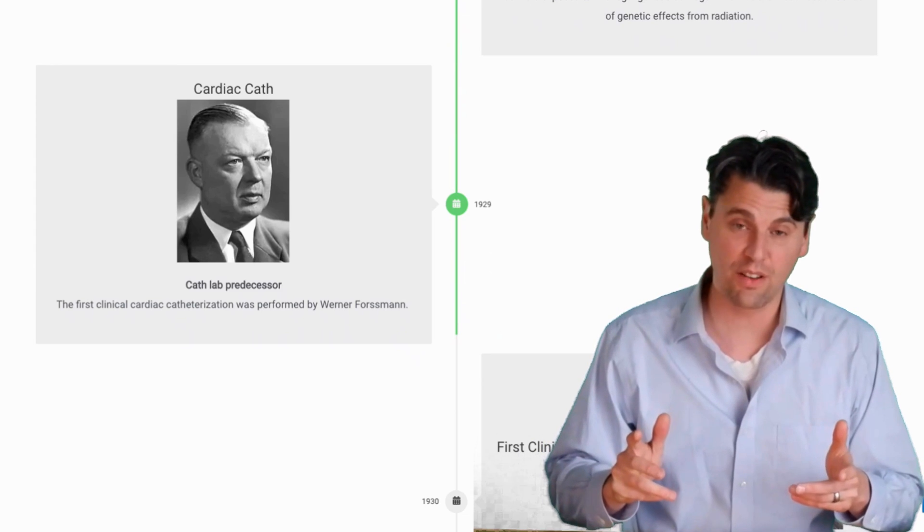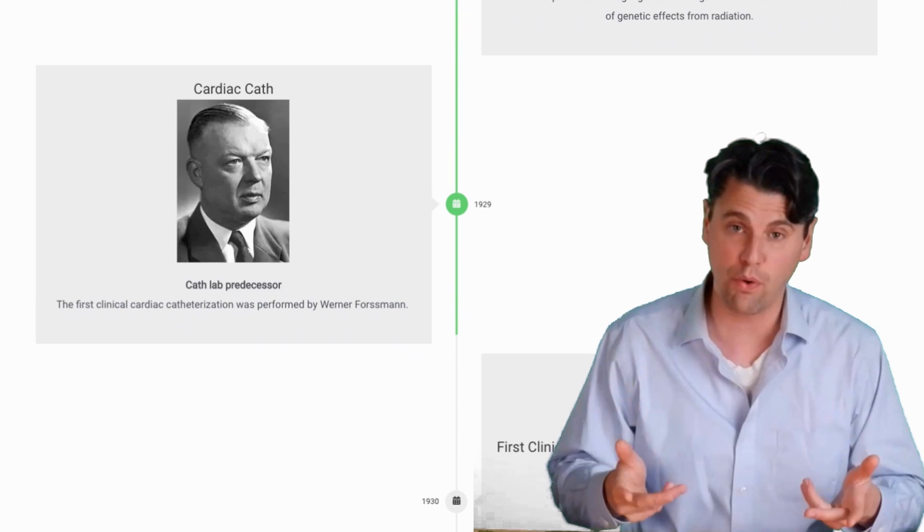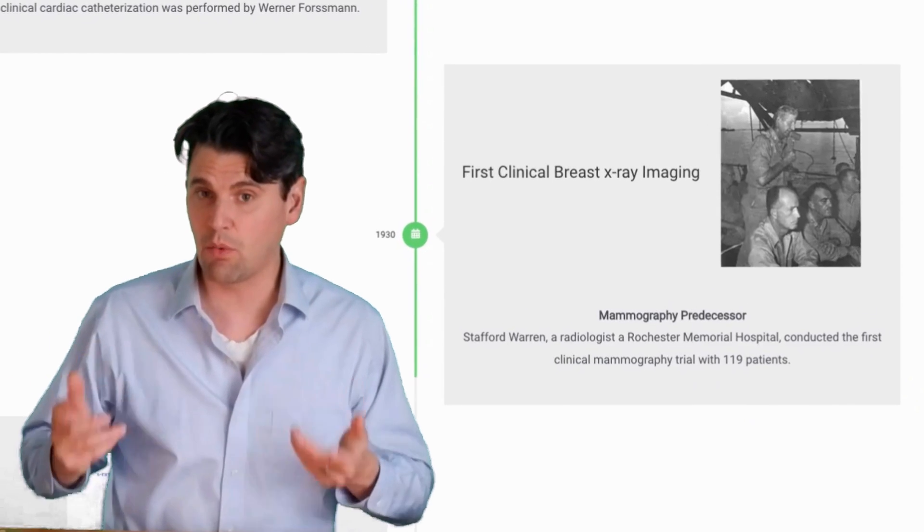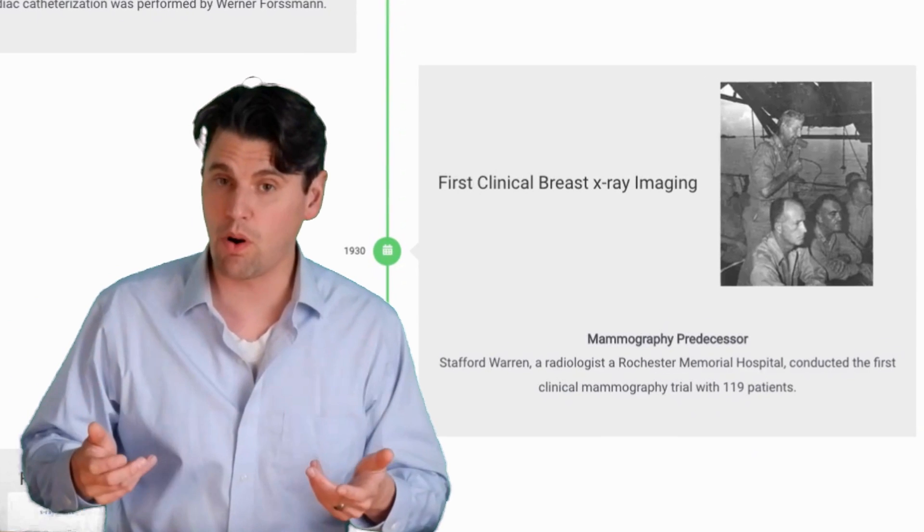In 1929, the first cardiac catheterization was performed by Werner Forsman. In 1930, the first clinical breast imaging was performed by Stafford Warren.